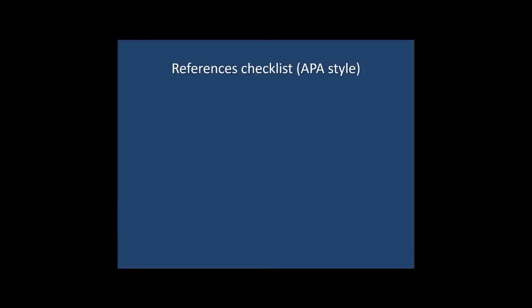The most useful thing I can do here is quickly take you through a references checklist and then invite you to have a look at the reference list in the example lab report, which you can find a link to in the description for this video. I am making the assumption that you are using APA style here, simply because that is the style most commonly used in psychology lab reports. But obviously if you are using a different style of referencing as required by your institution, then you need to make sure that the formatting of your reference section is done appropriately.